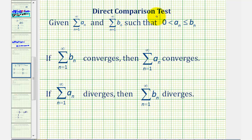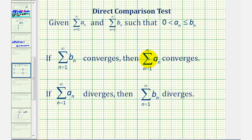The direct comparison test tells us: given the summation of a sub n and the summation of b sub n, such that a sub n is greater than zero and less than or equal to b sub n — meaning the terms of a sub n are less than or equal to the terms of b sub n — then if the summation of b sub n, the larger series, converges, then the sum of a sub n, the smaller series, also converges. But if a sub n, the smaller series, diverges, then b sub n, the larger series, also diverges.